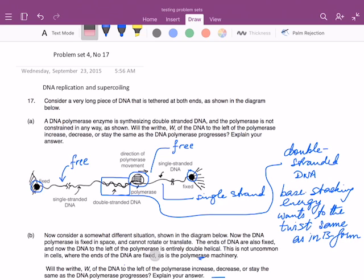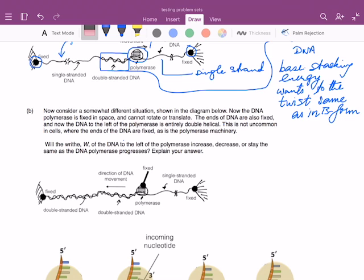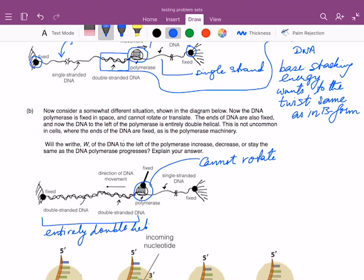Now the next part of the problem is more complicated because, as it shows in the diagram, now the DNA polymerase is fixed. It cannot rotate. And the other interesting thing here is that you'll see there's no single-stranded DNA on the left-hand side, so the polymerase cannot rotate.